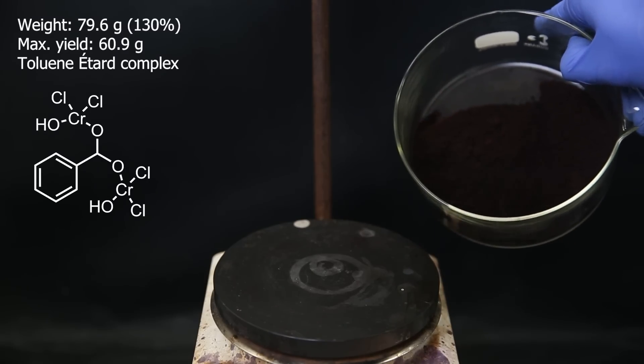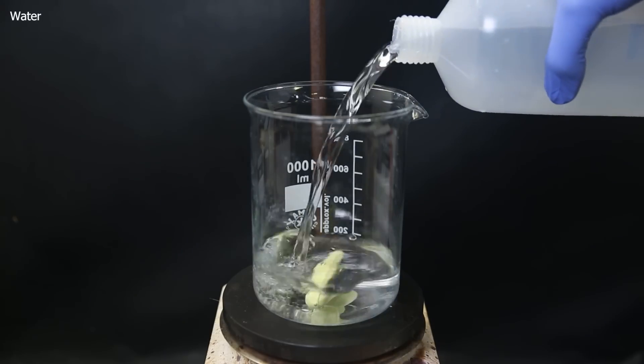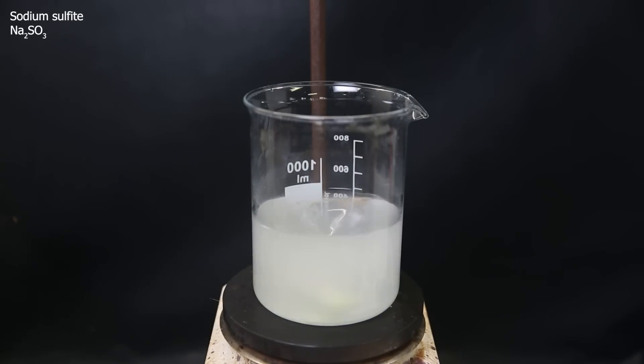Now for the next step, we will destroy the complex to give benzaldehyde. So I set up a large beaker with a stir bar and add in a bunch of water. I then saturate the water with sodium sulfide, which will reduce any toxic chromium-6 to the more friendly chromium-3.